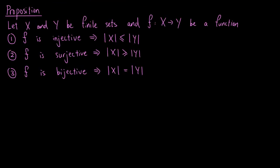Let's look at the following proposition. Let X and Y be finite sets, and f from X to Y be a function. If f is injective, then the size of X is less than or equal to the size of Y. If f is surjective, then the size of X is greater than or equal to the size of Y. If f is bijective, then the size of X equals the size of Y. To simplify our notation, let the size of X be m and the size of Y be n.